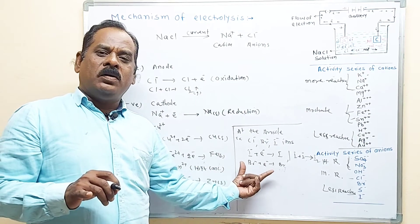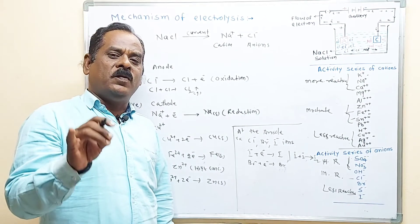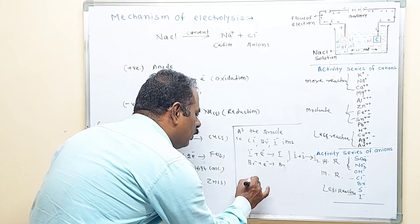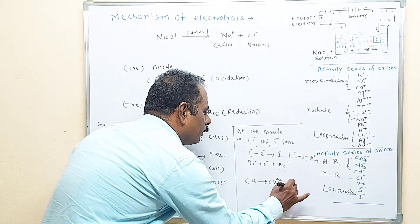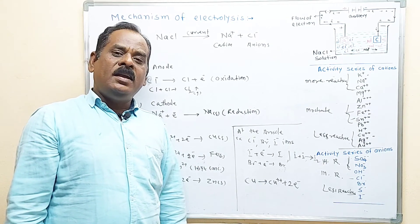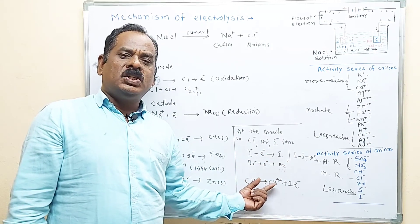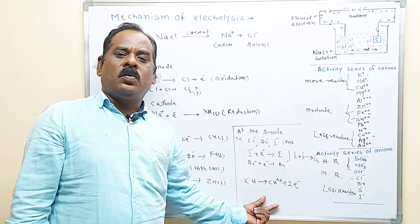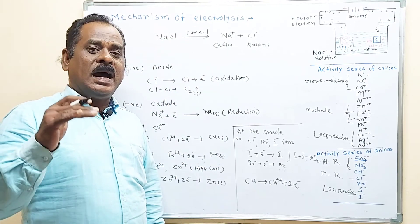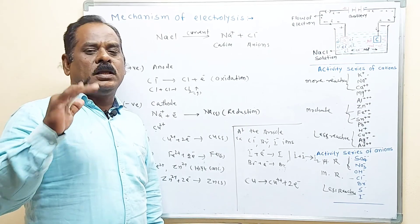The discharging of anions also depends upon the type of electrode and concentration of the solution. For example, if you use a copper or silver electrode in its own salt solution, the copper electrode itself loses electrons and forms copper ions in the solution. So discharging of anions also depends upon three factors: first is the reactivity of anions, second is the concentration of anions, and third is the nature of the electrode used in the electrolysis process. That covers the mechanism of electrolysis. Possible exam questions — multiple choice or short questions — will be given in the description box. Thank you.